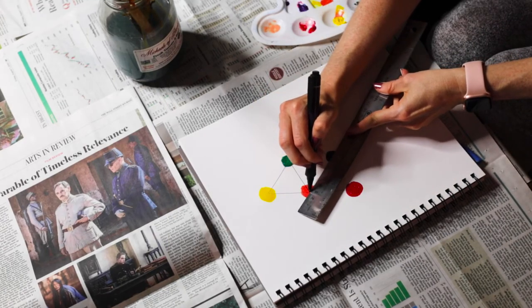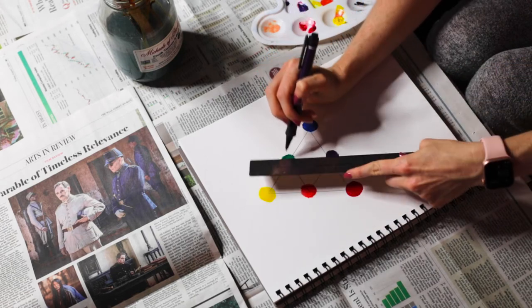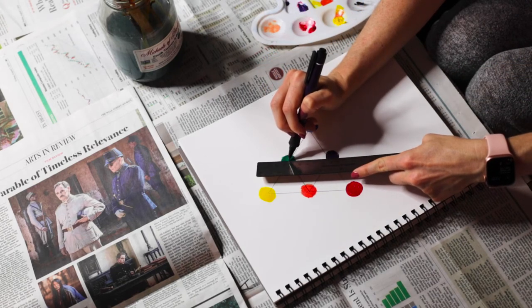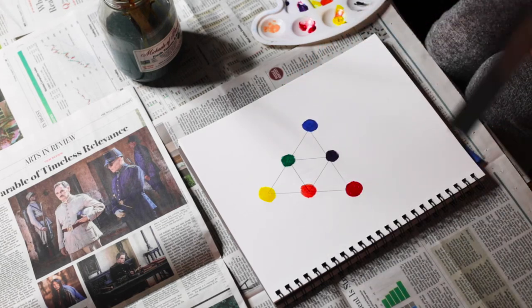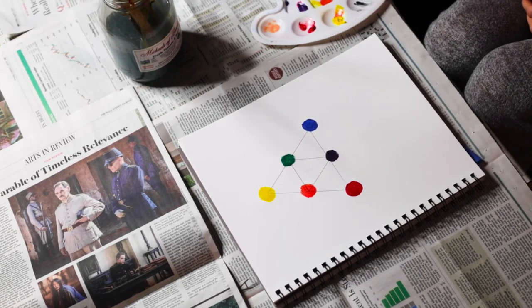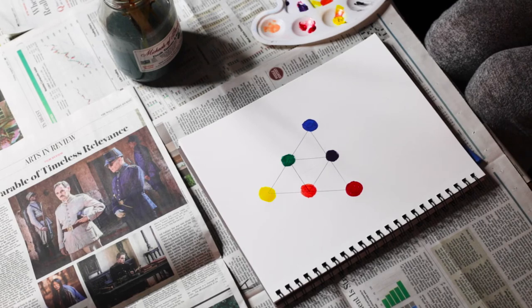All right. So now we are completing the Triforce here. We have our three secondary colors. So green, purple, and orange are our secondary colors. So again, just to recap really quickly, when you mix two primary colors, you get secondary colors.